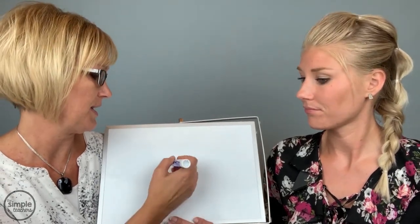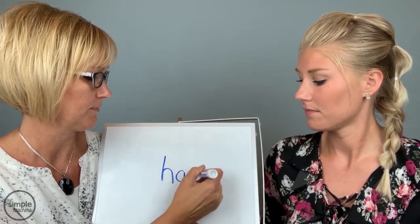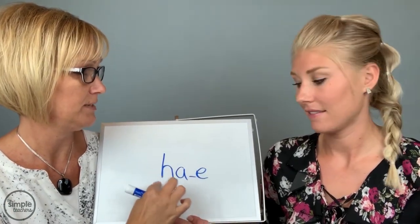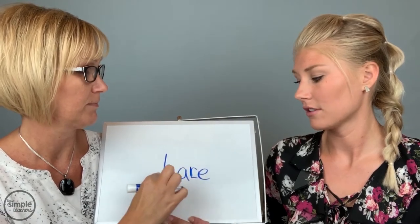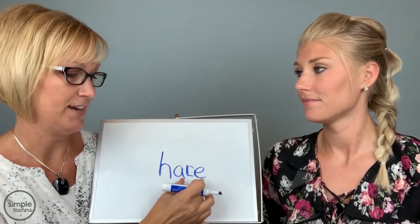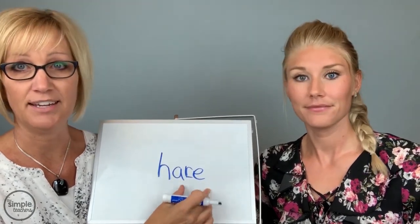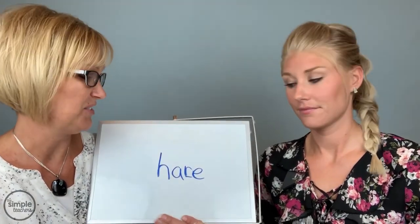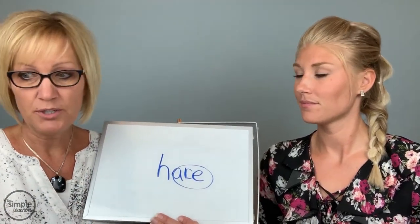Let's do one with A blank E. Sound: A. Blend: Hey. Er. Hair. Word: Hair. She got that just fine blending with that long A. And we don't have to learn another spelling. The fewer spellings we have to pack into their memory, the better.